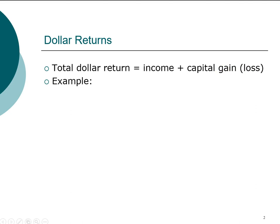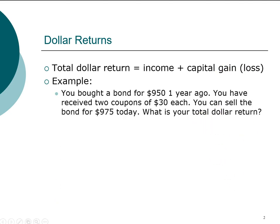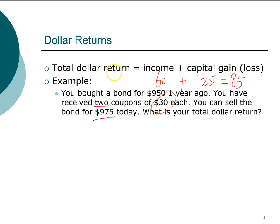Let's look at a quick example. Say you bought a bond for $950. You receive two coupon payments of $30 each, for a total of $60, and then you sell the bond for $975. You make $25 on the bond price — that's a capital gain — and the income is $60. Altogether, your total dollar return on this investment is $85.